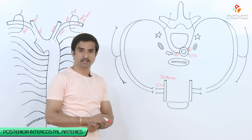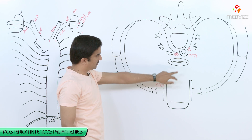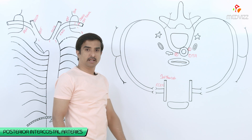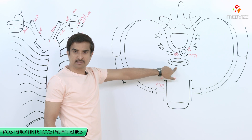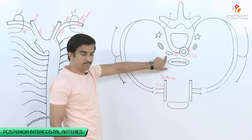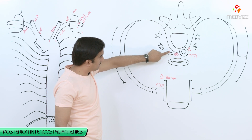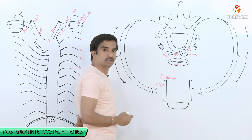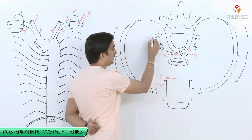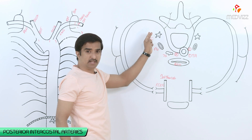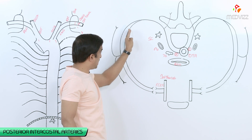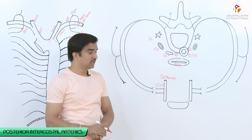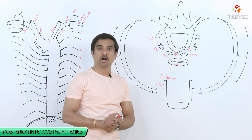The right posterior intercostal artery arises from the descending thoracic aorta, then runs behind the esophagus, behind the thoracic duct, behind the azygous vein, and behind the sympathetic chain. After running behind all these structures, it takes an arch posteriorly and then runs forwards and anteriorly through the intercostal spaces.